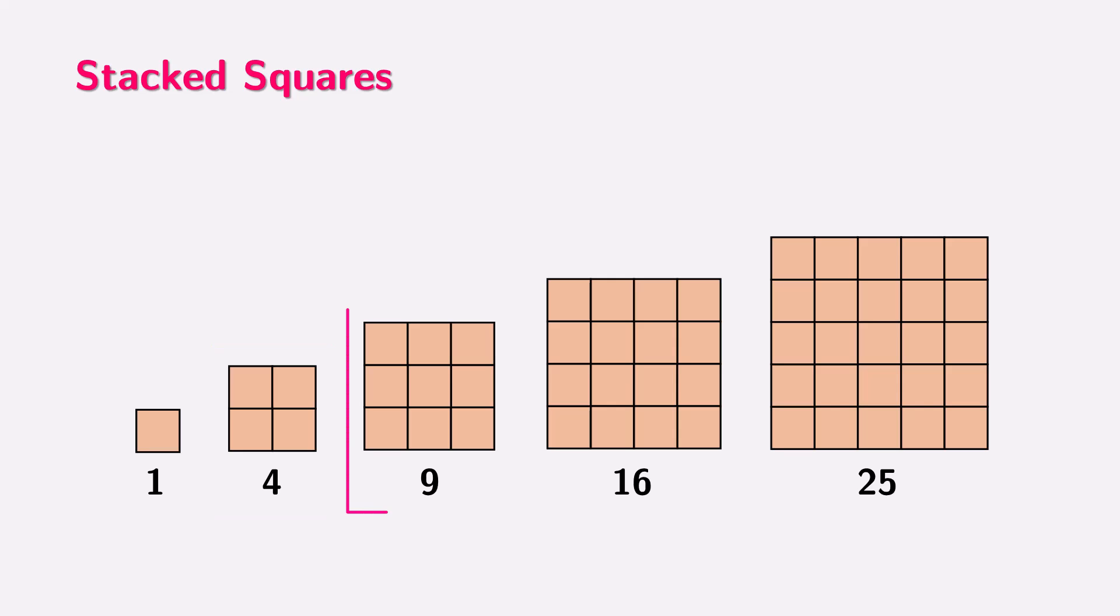Then, we have nine small squares arranged into a three by three square, followed by 16 small squares in a four by four square. Finally, we have 25 small squares arranged in a five by five square. If you observe carefully, each of these shapes represents a square number.